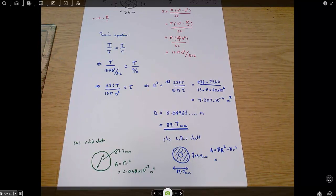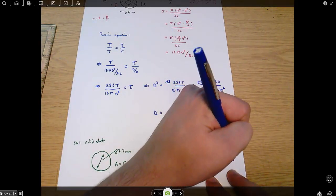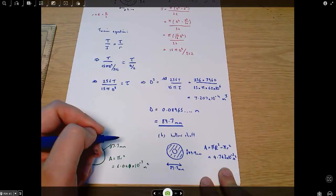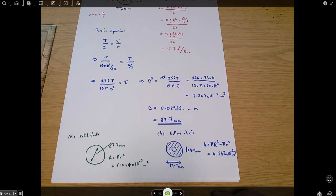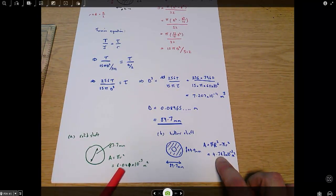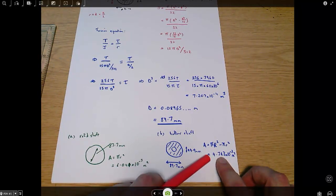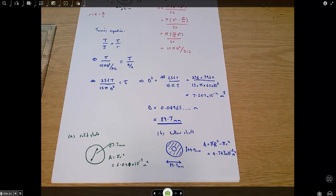I'm getting 4.743 times 10 to the minus 3 square metres as my area. So this is significantly lower. The hollow shaft has a significantly lower area than the solid shaft. That means it's going to have a significantly lower volume, and so you're saving weight and everything else by using a hollow shaft.